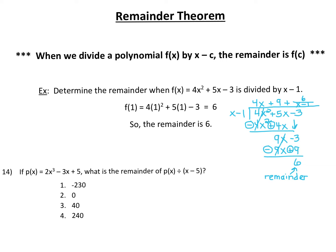Today we're going to learn a shortcut method of determining a remainder without having to go through the whole process of long division. We call this shortcut method the remainder theorem. When we divide a polynomial f(x) by x minus c, where c is just some constant, the remainder is f(c). Basically, it's what you get when you take positive c and substitute it into the function.